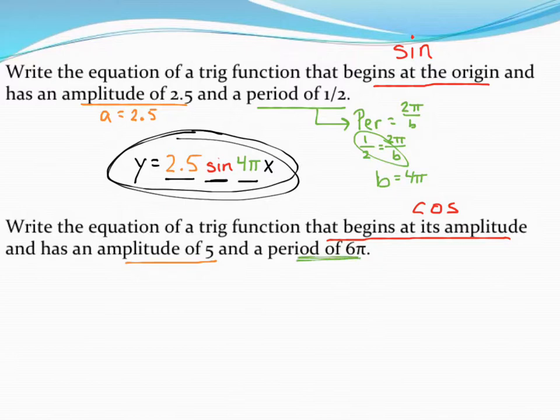So I've got the a value. I've got what kind of graph this is. All I need is the b value. The b value is not 6 pi. That's the most common mistake I see. Instead, remember, we have a little bit of work to do.